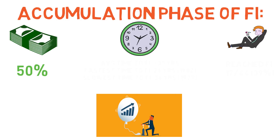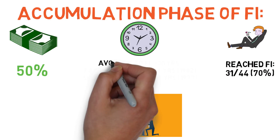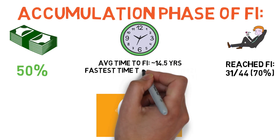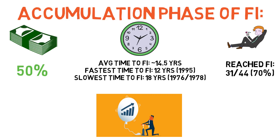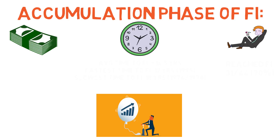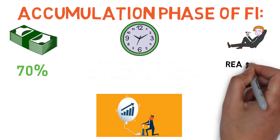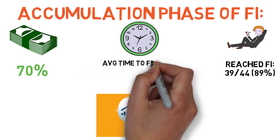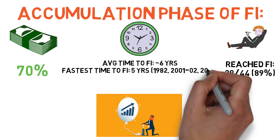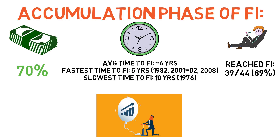With a 50% savings rate, a hypothetical investor would have reached financial independence in 31 of the 44 scenarios, averaging about 14.5 years. The fastest was 12 years starting in 1995 and the slowest 18 years starting in 1976 or 1978. With a 70% savings rate, financial independence was reached in 39 of 44 scenarios, averaging about 6 years. The fastest was 5 years starting in 1982, 2001, 2002, or 2008, and the slowest was 10 years starting in 1976.